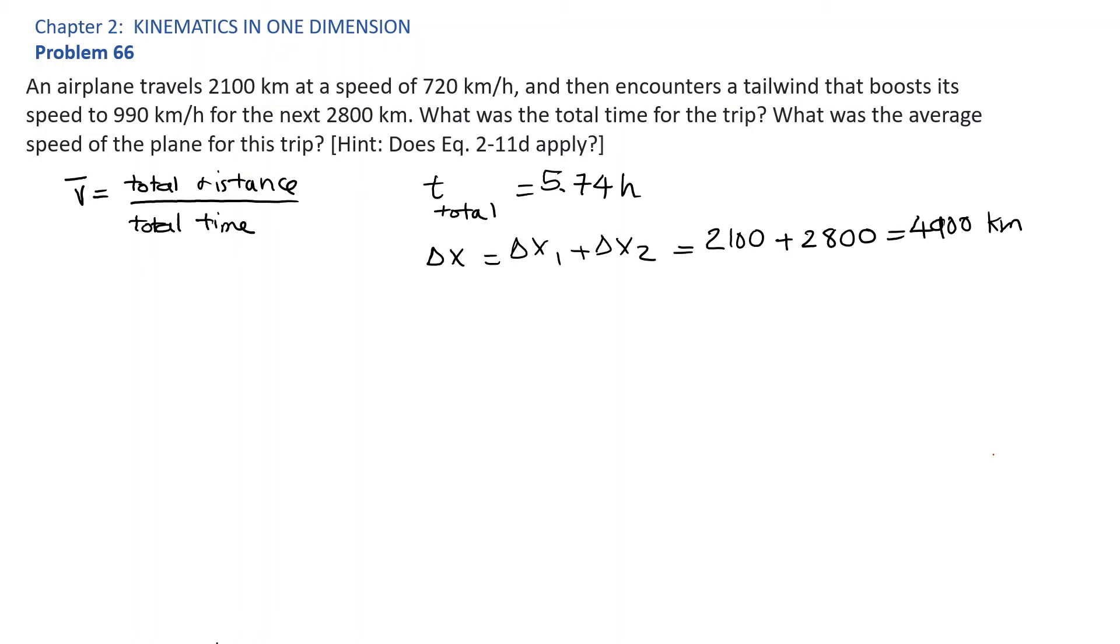So the average speed is equal to 4900 kilometers divided by 5.74 hours, which is equal to 854 kilometers per hour.